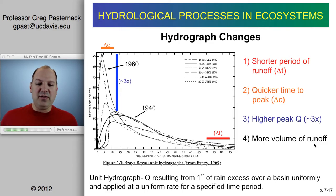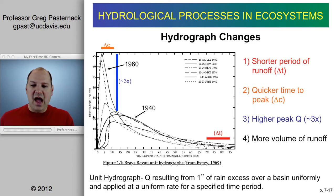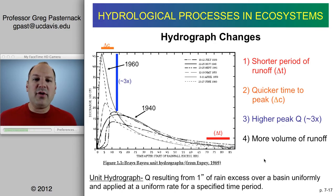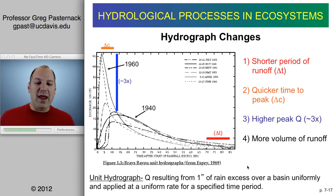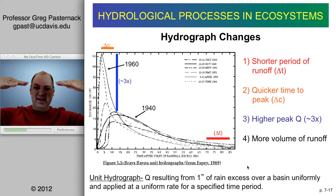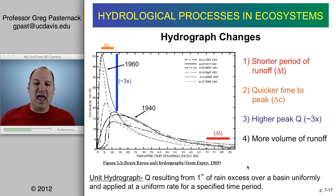A remarkable hydrological study was published by Espey in 1969. The x-axis shows time and the y-axis shows discharge Q in units of 100 cubic feet per second — so 25 means 2,500 CFS. The curves shown are called hydrographs — how discharge in a river changes through time. This is a unit hydrograph: the discharge resulting from one inch of rain excess applied uniformly over a basin at a uniform rate for a specified time, essentially producing one inch of runoff.